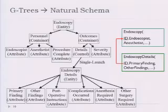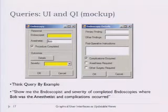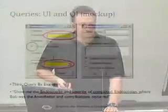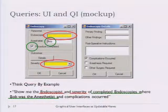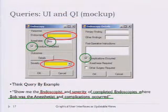Here's what we want to provide to a domain expert. This is the query interface we're striving for — think of it like query by example. If I'm trying to construct a query, I say: show me the endoscopist and the severity of endoscopies that have been completed, where Bob was the anesthetist and where complications occurred. Very much like query by example — it's certainly our inspiration for this work.